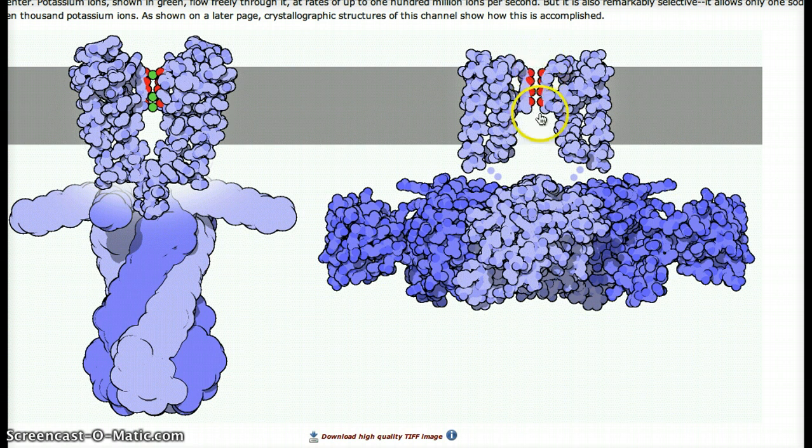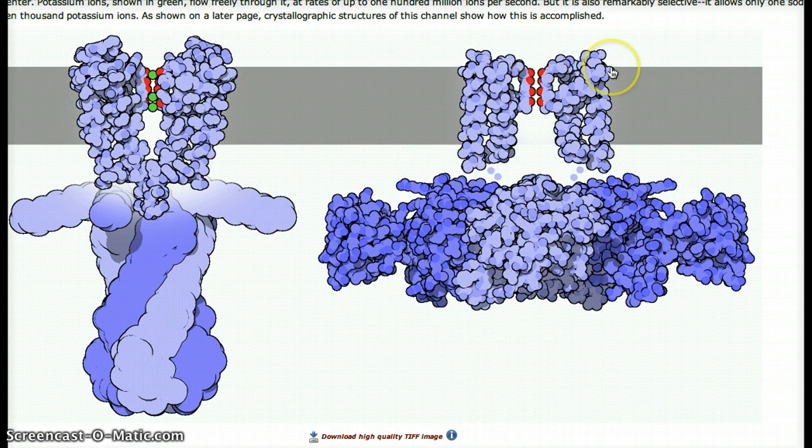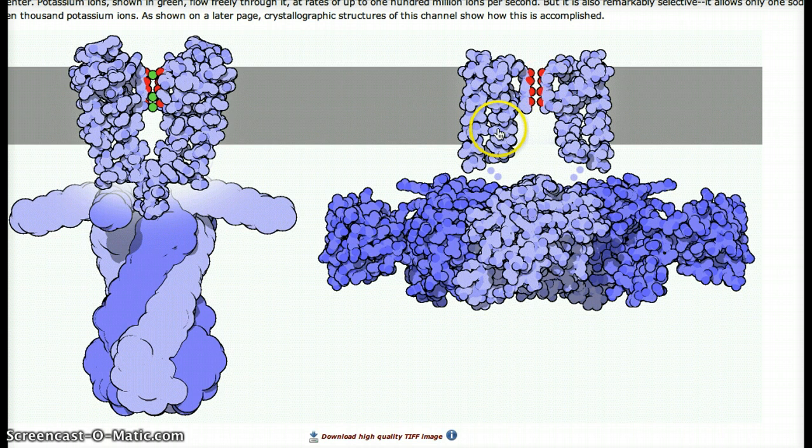And that's how they don't allow other ions through, as sodium ions and other kinds of ions would not be able to interact with those oxygen atoms that line the channel.